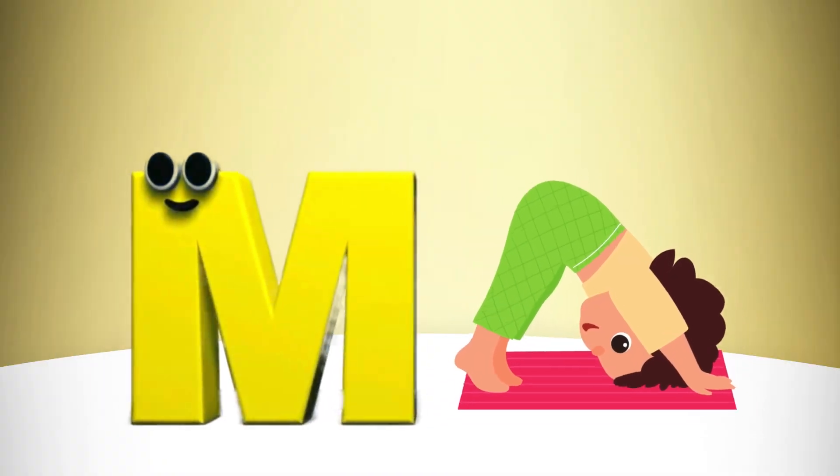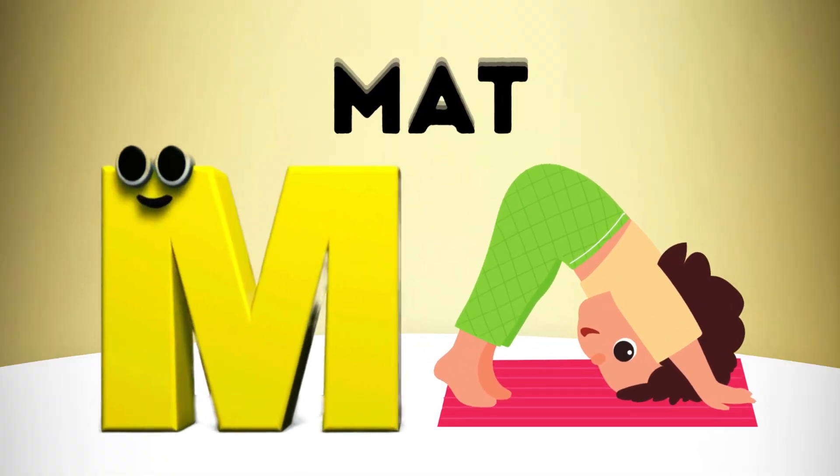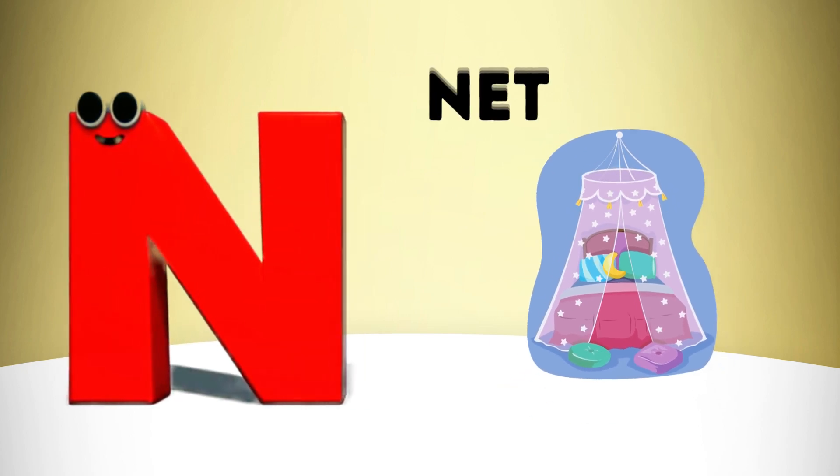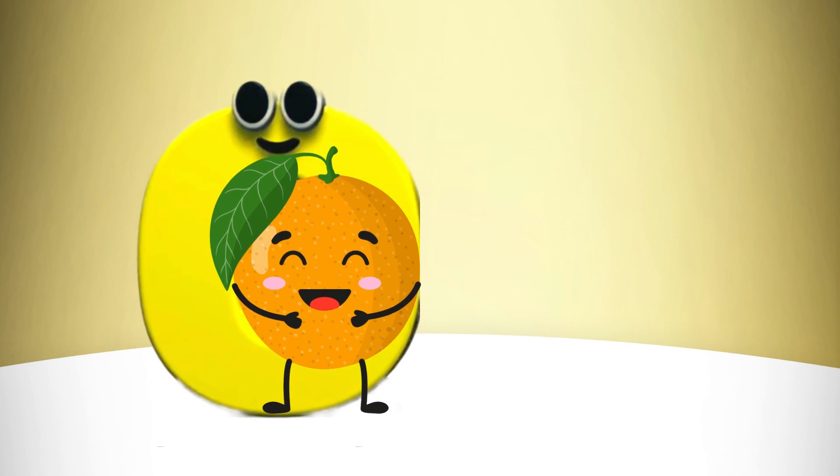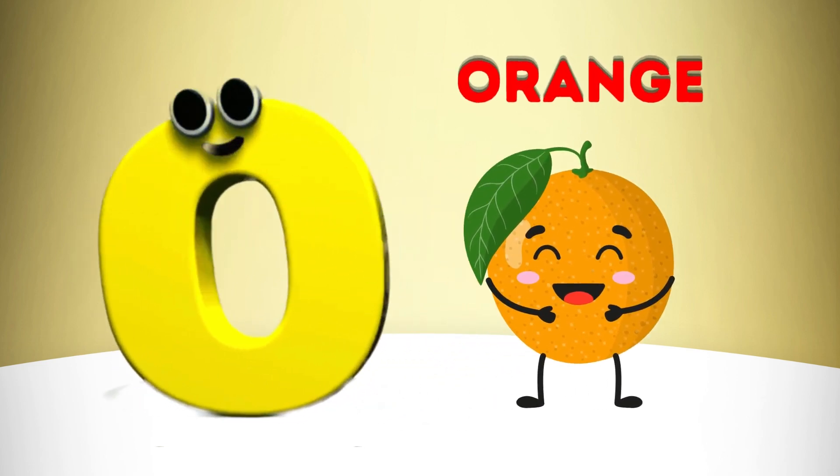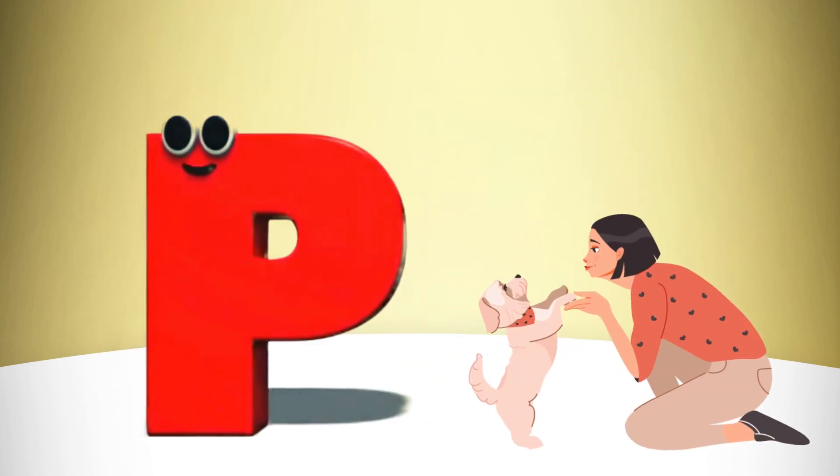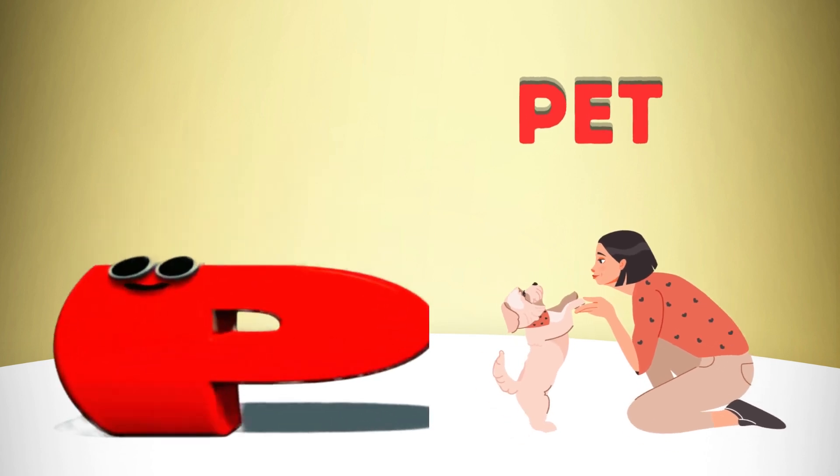M is for Mat, M-M-Mat. N is for Net, N-N-Net. O is for Orange, O-O-Orange. P is for Pet, P-P-Pet.